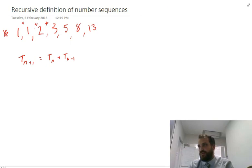So if I want to find out what T_2 is, the second term, then that's going to be equal to T_n, the term before it, that's term 1, plus T_n-1, the term before that, term 0. Now term 1 is 1, and term 0 is the thing before that, which is just 0, which means that term 2 is equal to 1.